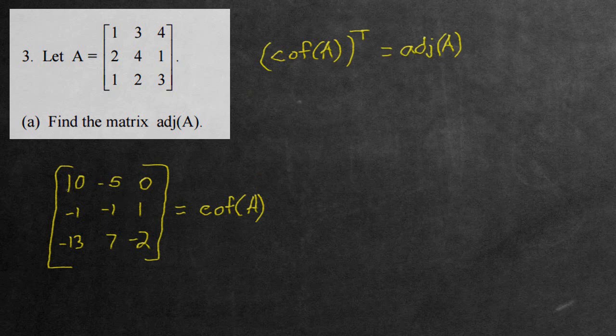So this column right here, this 10, a negative 1, a negative 13, make that into a row. It'll become 10, negative 1, negative 13, and now it's a row. Then go to the next column, negative 5, make that into a row: negative 5, negative 1, and 7. Last one: 0, 1, and negative 2. And this here is our adjoint matrix of A.